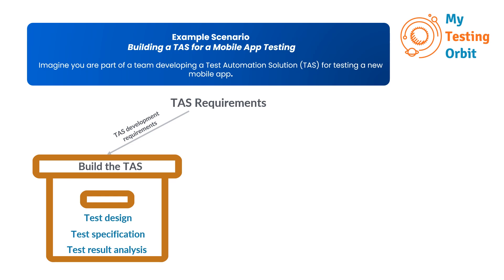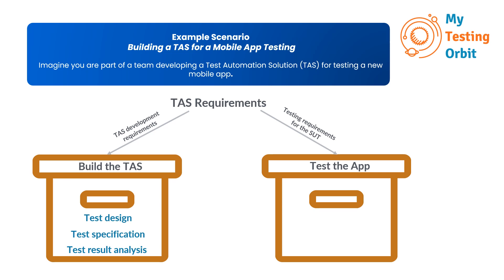The second box is testing requirements for the SUT — the 'test the app' box. This box is all about how your TAS will interact with the mobile app you are testing; in this case, the mobile app is our SUT. Inside this box, you will find requirements that explain how the TAS should test the app — like instructions for using your TAS to test specific features and properties of the mobile app. It's like having a checklist that tells you what parts of the app to test and how to do it.